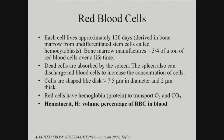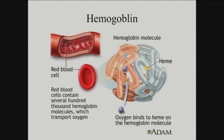Red blood cells are manufactured from the bone marrow and absorbed by your spleen once they outlive their basic lifespan. Red blood cells contain hemoglobin — the protein that transports oxygen and carbon dioxide. Each red blood cell contains around 100,000 of these molecules. They have heme groups, which are iron groups where oxygen binds for transport and where the exchange of oxygen and carbon dioxide occurs. Hematocrit is the volume percentage of red blood cells in your blood, with 42 to 47 considered normal.